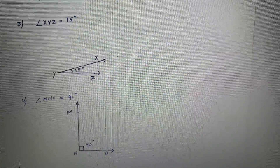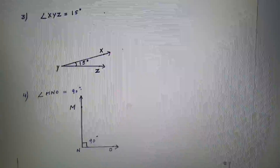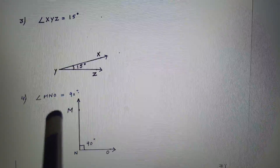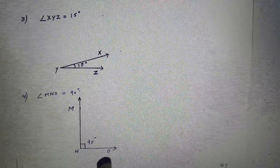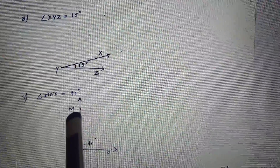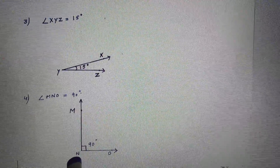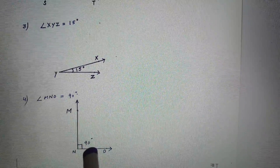You will get angle XYZ equal to 15 degrees. Fourth is angle MNO equal to 90 degrees. Here the vertex is N. So draw ray NO, keep the protractor on point N, mark the 90 degree point, join points N and M and you will get angle MNO equal to 90 degrees.